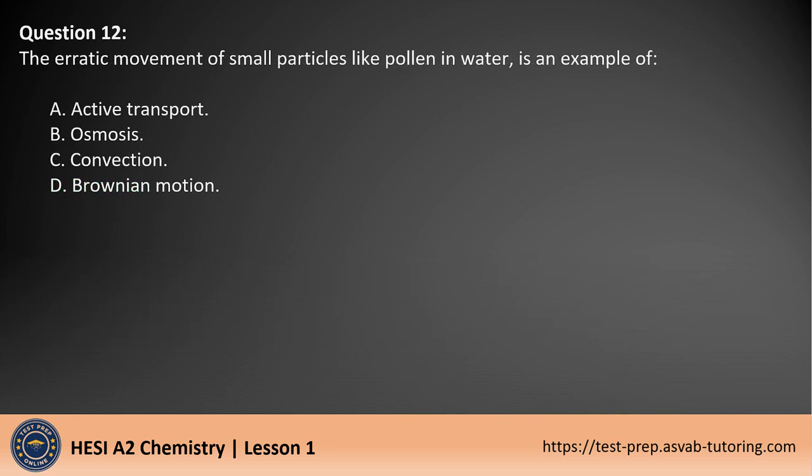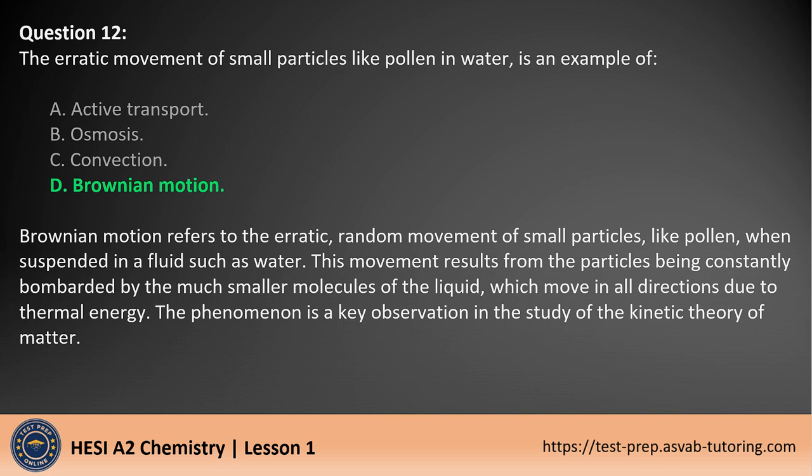Question 12. The erratic movement of small particles like pollen in water is an example of A. Active transport. B. Osmosis. C. Convection. D. Brownian motion. The answer is D. Brownian motion refers to the erratic, random movement of small particles, like pollen, when suspended in a fluid such as water. This movement results from the particles being constantly bombarded by the much smaller molecules of the liquid, which move in all directions due to thermal energy. The phenomenon is a key observation in the kinetic theory of matter.